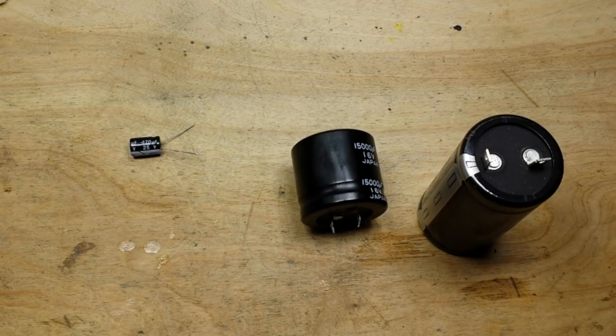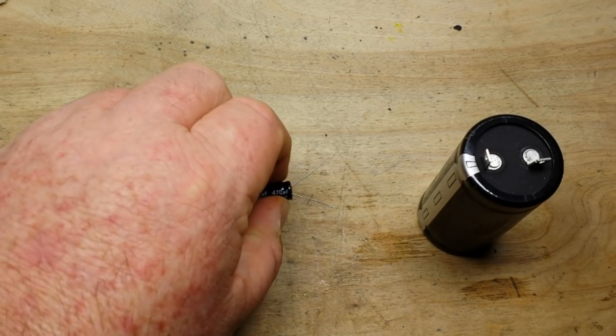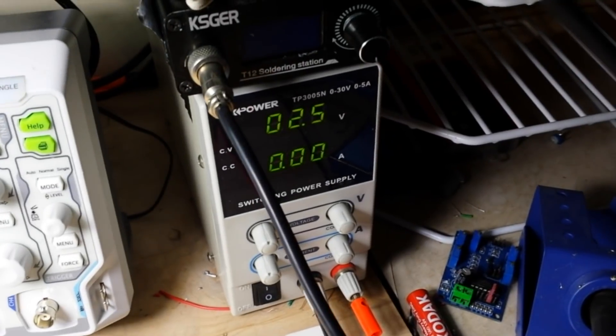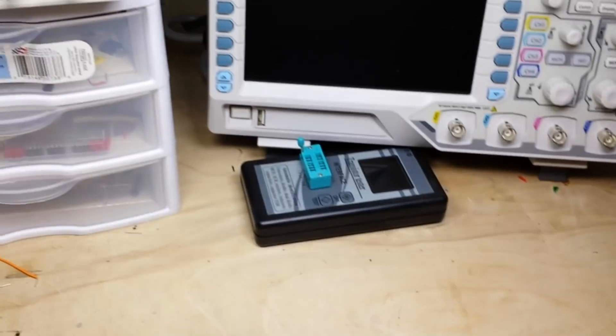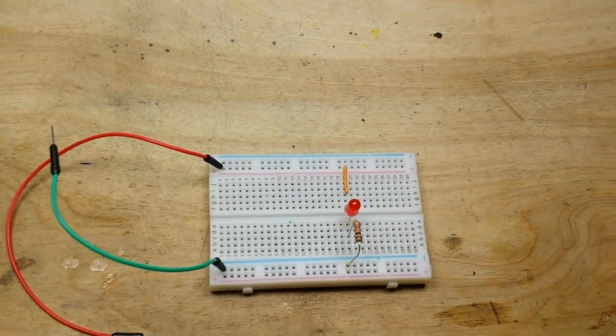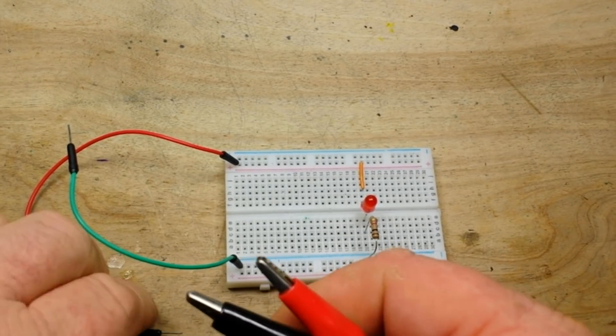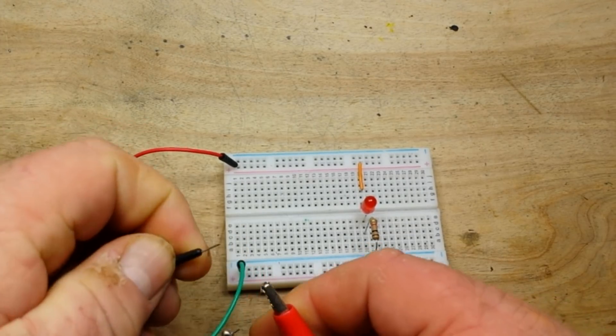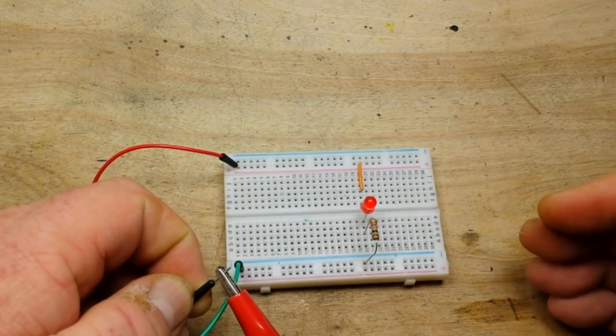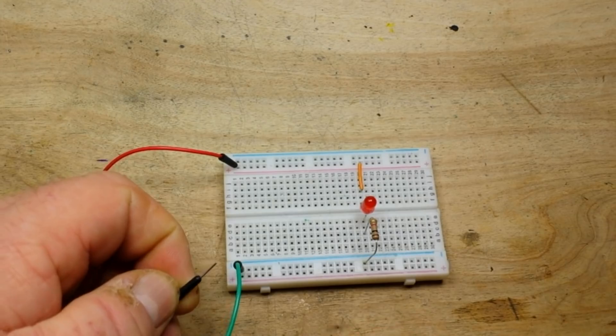So let's do a little demonstration of the difference between supercap and a standard cap. I have the power supply set for 2.5 volts. That is where we're going to charge both of our capacitors. Here is the power supply wires and we'll hook them up here. This is a 1k resistor on a red LED which have a forward voltage around 1.7, 1.8 and there you can see it lit quite well.